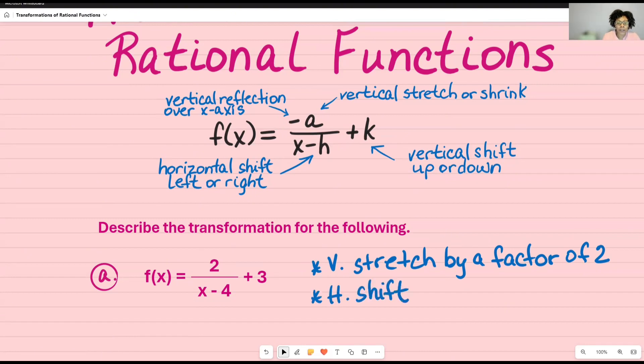And then I have a horizontal shift or you can say transfer, translation, it's fine. And again, that is this portion right here. What would x have to be to make this equal zero plus 4? So that means I'm going to go to the right. So horizontal shift to the right by 4 units.